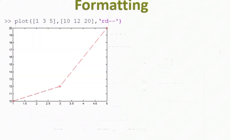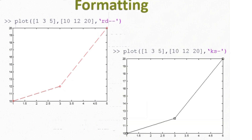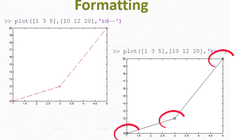If we look at the same command that we just ran to plot those three points and we add the optional third formatting argument, I have 'rd--', and that means I want a red line, my data points marked as diamonds, and connected with a double dash. Another option with the same three points: my color is k, which is black — note that b is actually for blue. S means I want squares for my data points, and a single dash means a solid line connecting those data points.